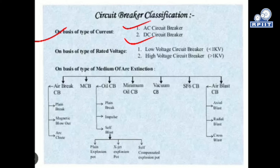Next, on the basis of rated voltage, there are two kinds of voltage levels — low voltage and high voltage. Depending upon the voltage level, we utilize the circuit breaker accordingly. For less than one kilovolt, we use a low voltage circuit breaker, and for greater than one kilovolt, we use a high voltage circuit breaker.